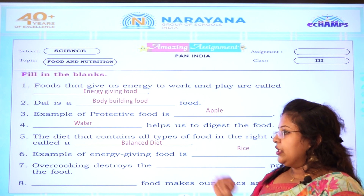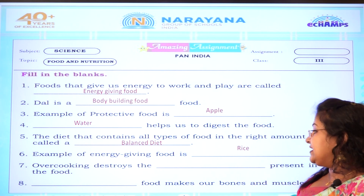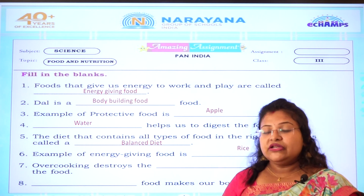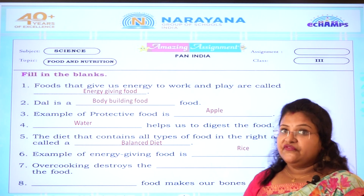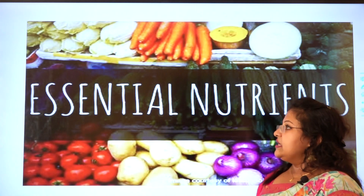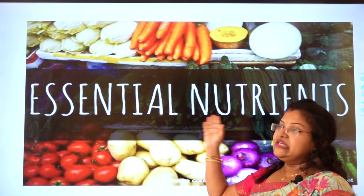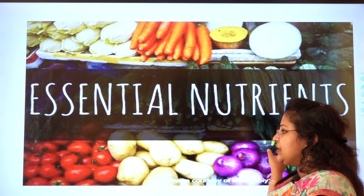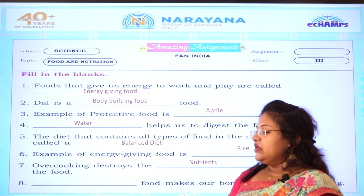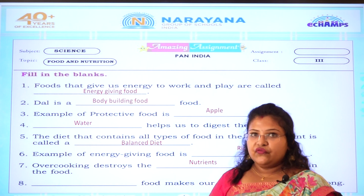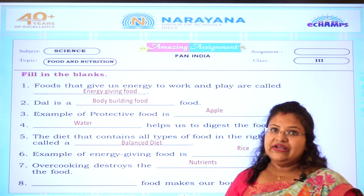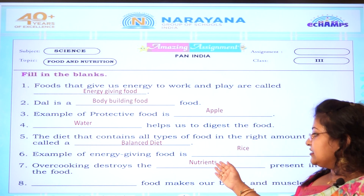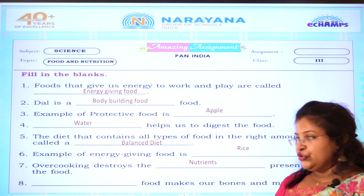Seventh one: overcooking destroys the dash present in the food. What will be destroyed if we overcook food? The answer is essential nutrients. Whatever nutrients are present inside the food, if we overcook it the nutrients of the food will get destroyed. So in the blank we have to write nutrients.